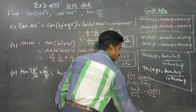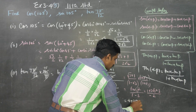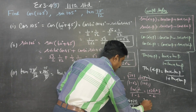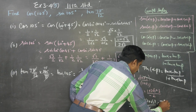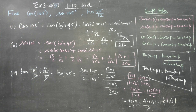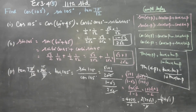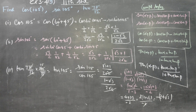The numerator gives 1 + 2√3 + 3 = 4 + 2√3, and the denominator is −2. Taking −2 as common factor gives −2(−2 − √3) / −2, simplifying to −2 + √3. Rationalizing with the conjugate gives the final answer: tan 105° = −2 + √3.